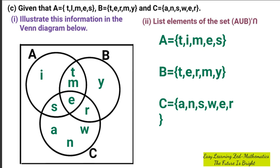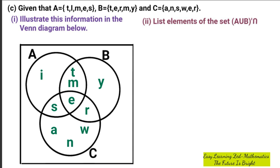We have talked about elements E and R already, so we are not going to talk about them. Since we are done with all the elements in these three different sets, that means we have presented our information correctly, as long as we have entered them in the correct portion. This is how the answer was supposed to look like — the Venn diagram that was supposed to be drawn was supposed to be like that.